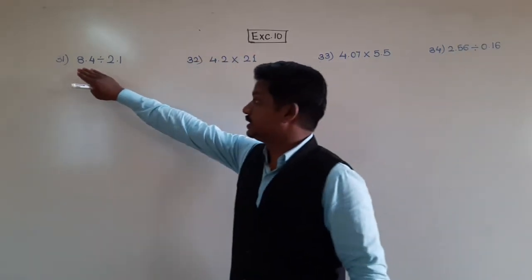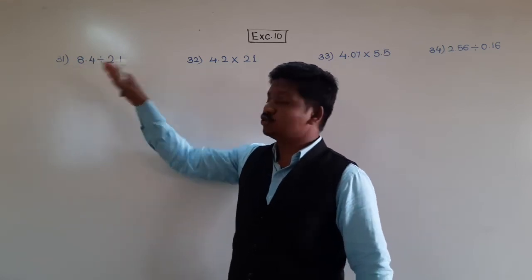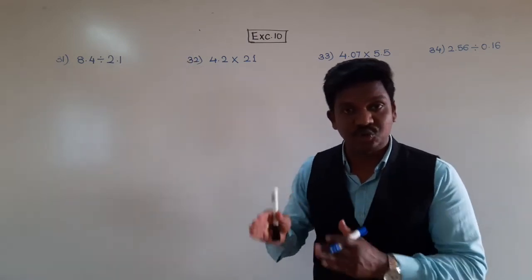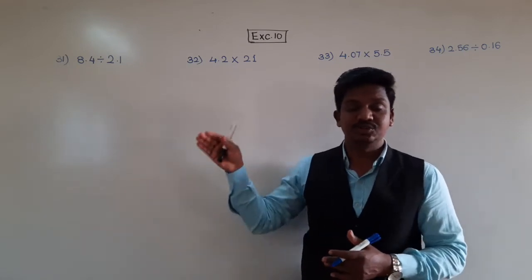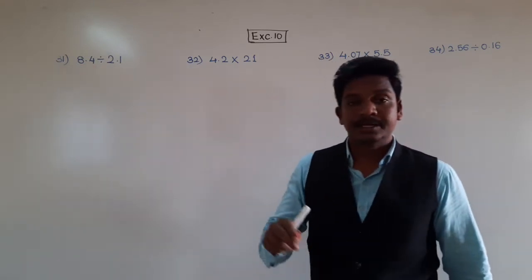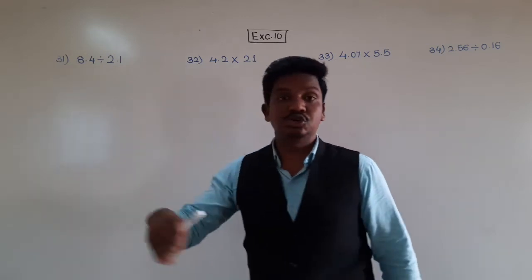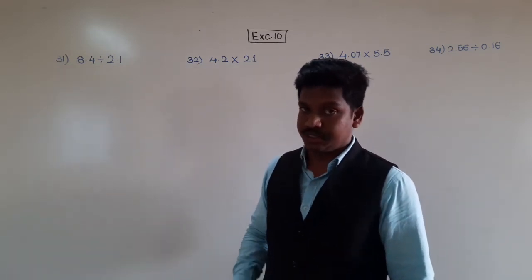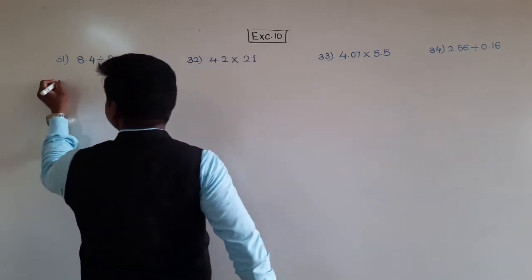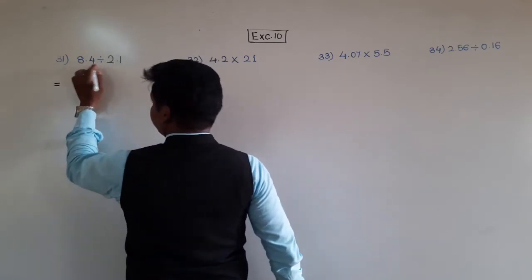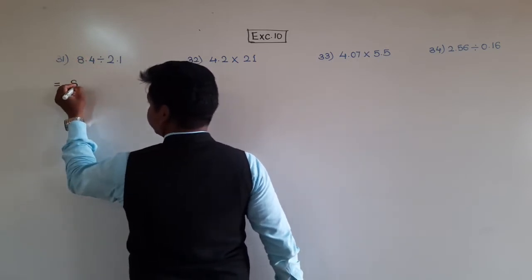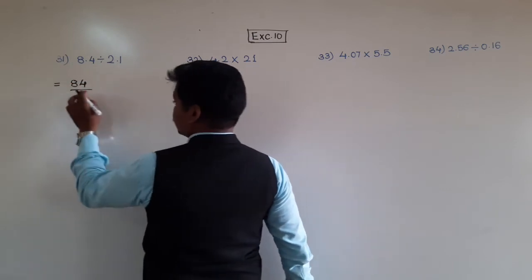There is division: 8.4 divided by 2.1. Remember that these are decimal numbers — they are one kind of fraction only. So by dividing, we are going to use the rules of fractions. First, what we will do is convert these decimal numbers into common fractions, as we have seen in the first question. See: 8.4 — put your finger on the decimal point; which number do you see? 84. Write 84 as the numerator and below the bar write 1 first, then after it put as many zeros as there are decimal places after the decimal point — that is one zero. So 8.4 equals 84 upon 10.